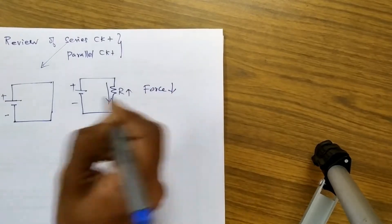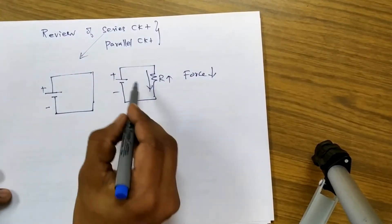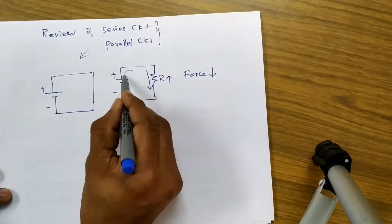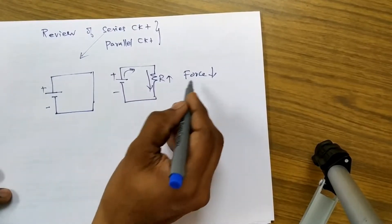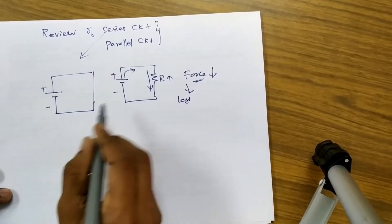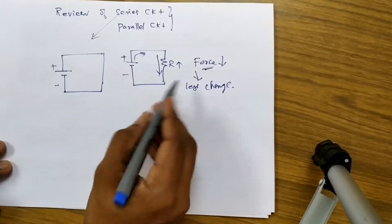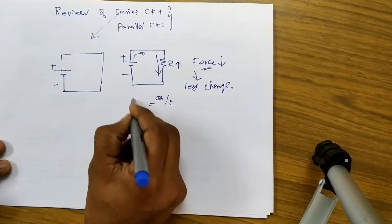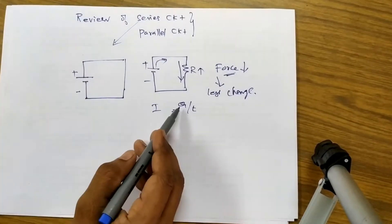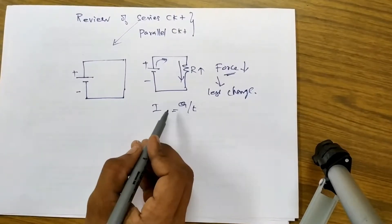So the force is reducing. Once the force is reducing, the current charge coming from the battery is less, because less force will attract less charge. Less charge means less current, because I is equal to Q divided by T, where Q is nothing but the number of charges.